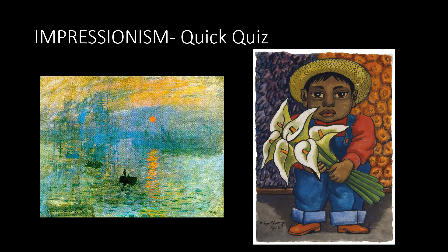Can you spot the impressionist painting between these two? If you guessed the one on the left, you are right. Notice the lighting and the ships in the background — they are not complete, but you still get the sense that they are there. The one on the right is a piece by Diego Rivera.